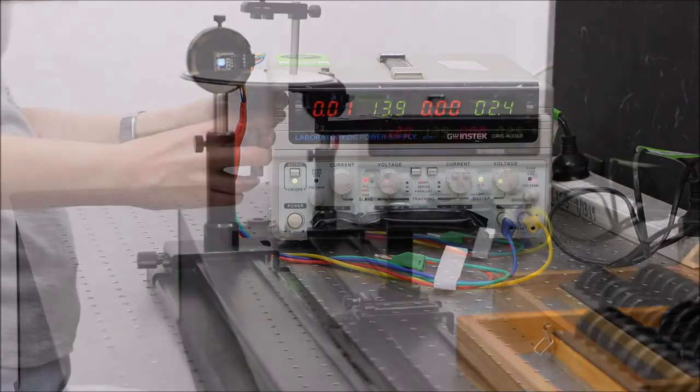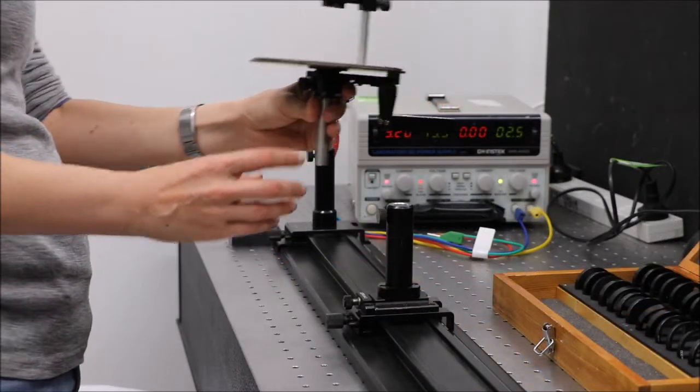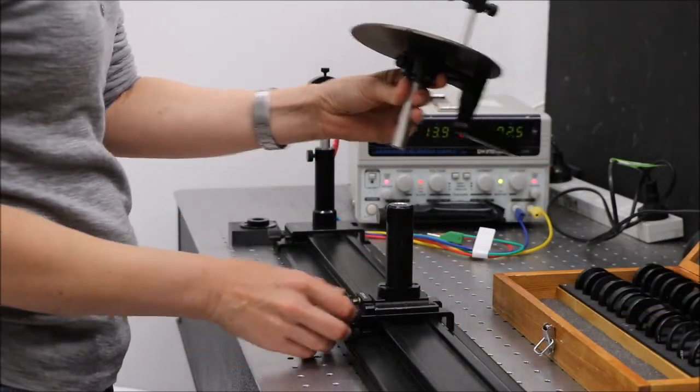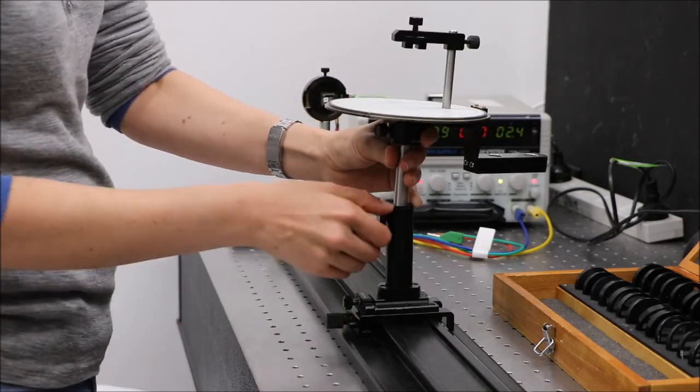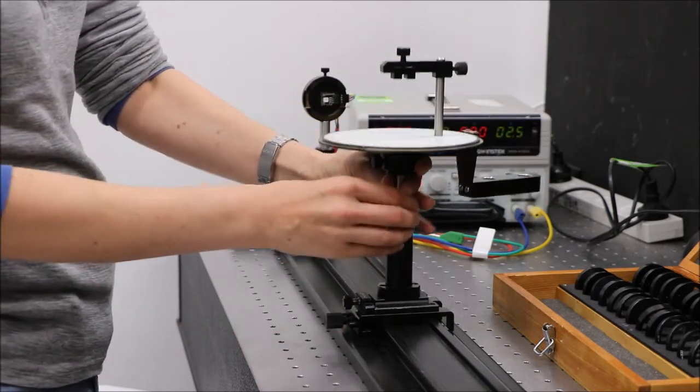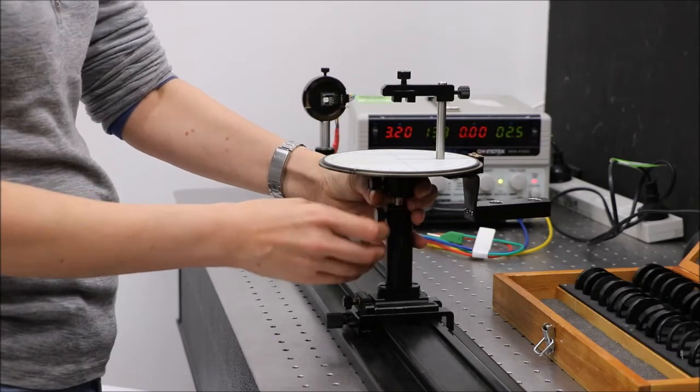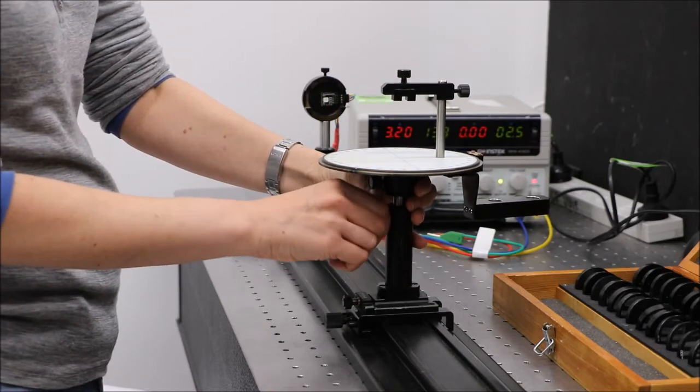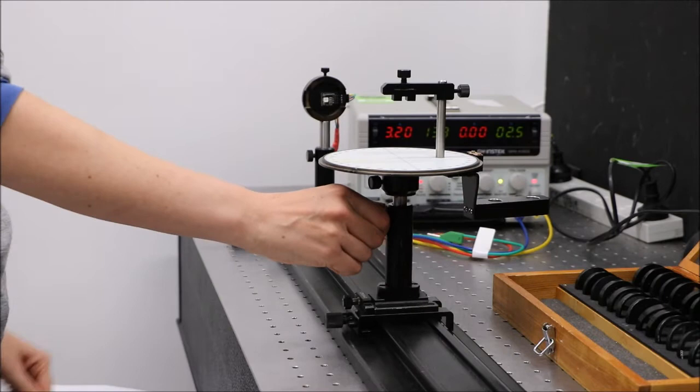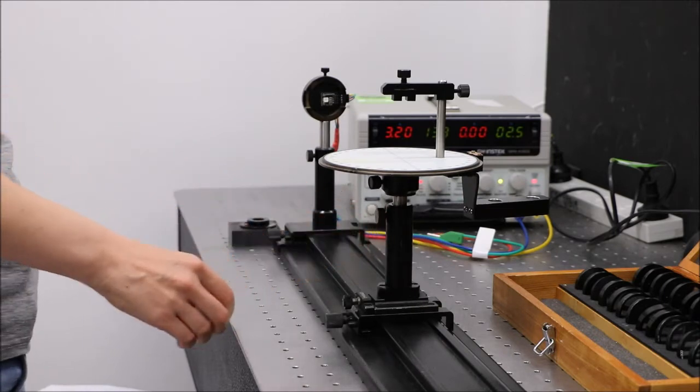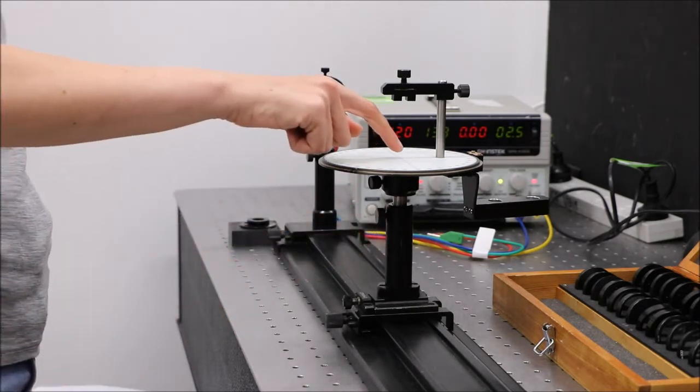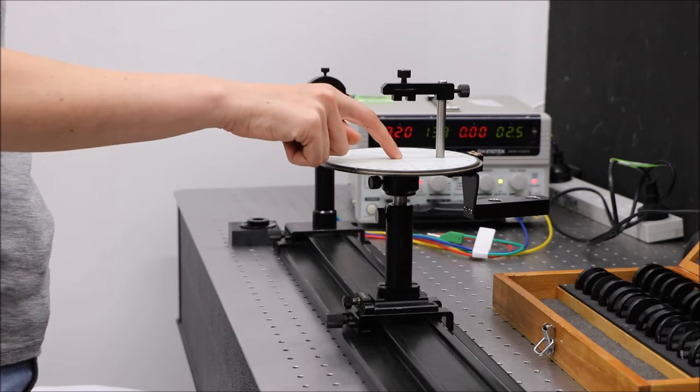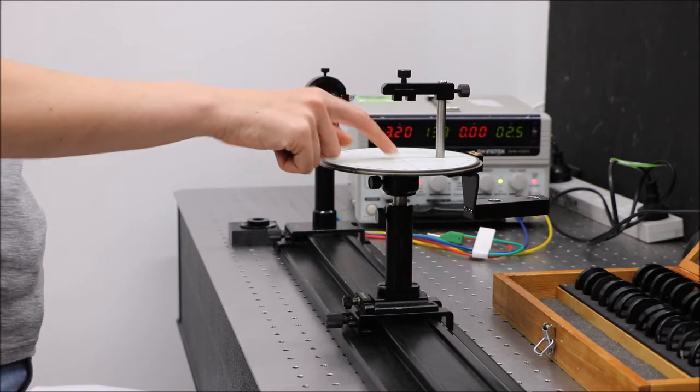Insert a turntable into an XY holder and locate the centre point of the turntable. This will be the axis of rotation of the turntable.